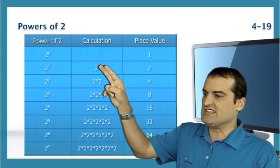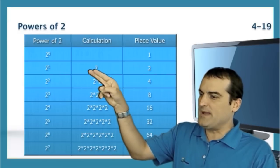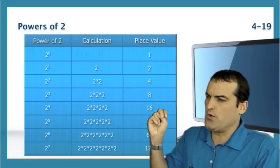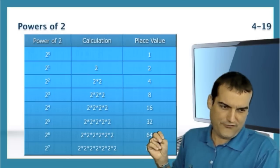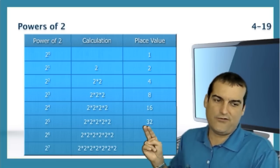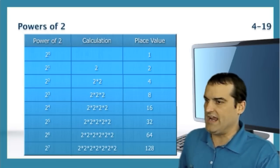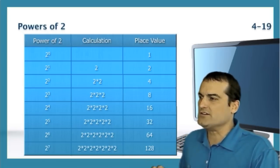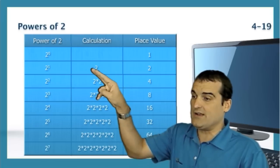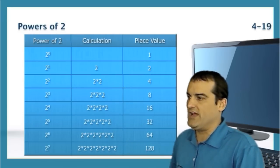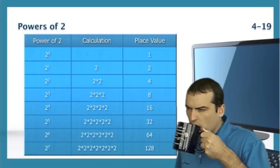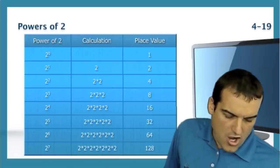What we need to memorize here is 2 raised to the 0 is 1. And then we just memorize that it doubles from that point forward. 2 to the 1 is 2, 2 to the 2 is 4, 2 to the 3 is 8, 2 to the 4 is 16, 2 to the 5th is 32, 2 to the 6th is 64, and 2 to the 7th is 128. A very powerful mathematical relationship here that we want to memorize. And we'll end up building this chart on scratch paper to help us.